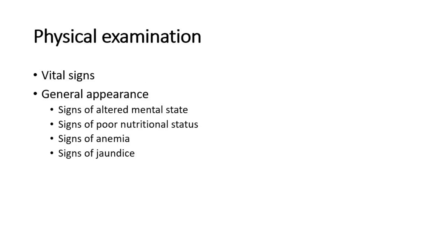On physical examination, check the vital signs including temperature, blood pressure, pulse rate, respiratory rate, and pain score. For general appearance, look for any signs of altered mental status — whether the patient is alert and oriented to time, place, and person. Signs of poor nutritional status such as cachexia, which is wasting of muscles such as the temporalis muscle. Check for signs of anemia via palmar or conjunctival pallor, and signs of jaundice with yellowish discoloration of the skin or eyes.